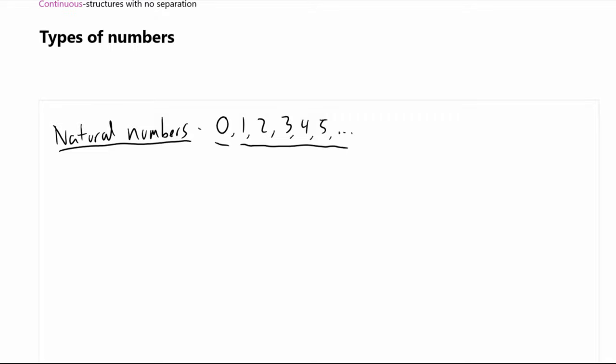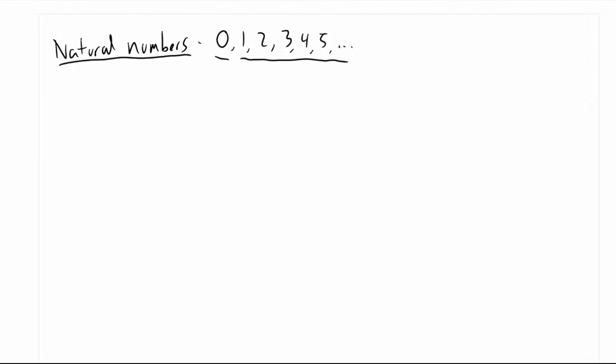For those of you in Math 248 or who have taken it before, old-fashioned mathematics don't actually consider 0 to be a natural number. But in more modern mathematics or in computer science, we do consider 0 to be a natural number. So for the purposes of this class, we will be including 0 as a natural number. We can actually use this definition of natural numbers to build more types of numbers, like the integers.